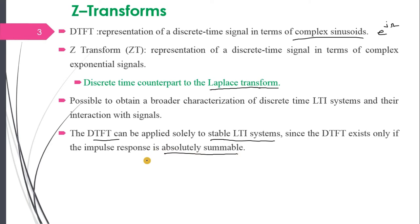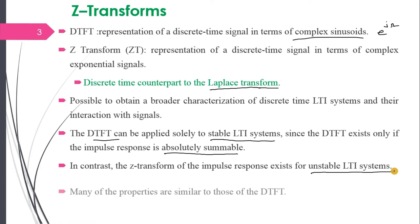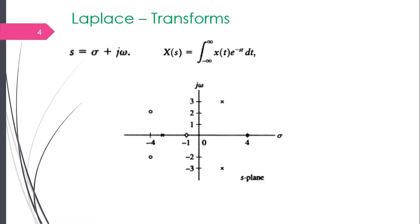The DTFT can be applied only for stable LTI systems. In contrast, the Z transform of the impulse response exists even for unstable LTI systems — that's the biggest advantage. For an unstable system, you can do analysis using Z transform, whereas it is not possible using DTFT. Many of the properties of Z transform are similar to those of DTFT, so Z transform properties follow in the same manner.